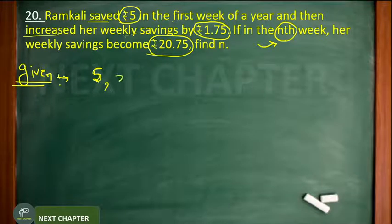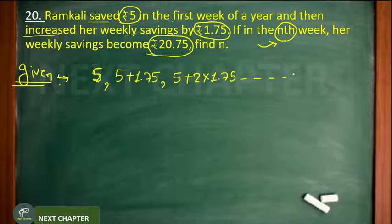Given is that Ramkali saved 5 rupees in the first week, so your first term will be 5 rupees. In the second week how much did she save? 5 rupees plus 1.75, add that much more.